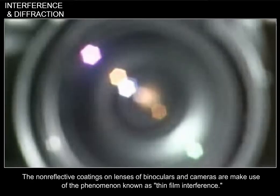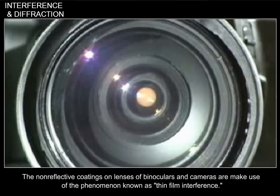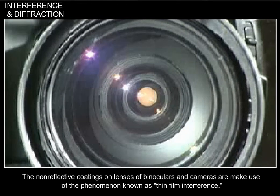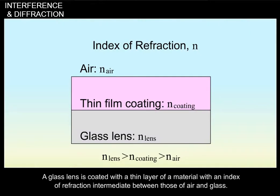The non-reflective coatings on lenses of binoculars and cameras make use of the phenomenon known as thin film interference. A glass lens is coated with a thin layer of a material with an index of refraction intermediate between those of air and glass.